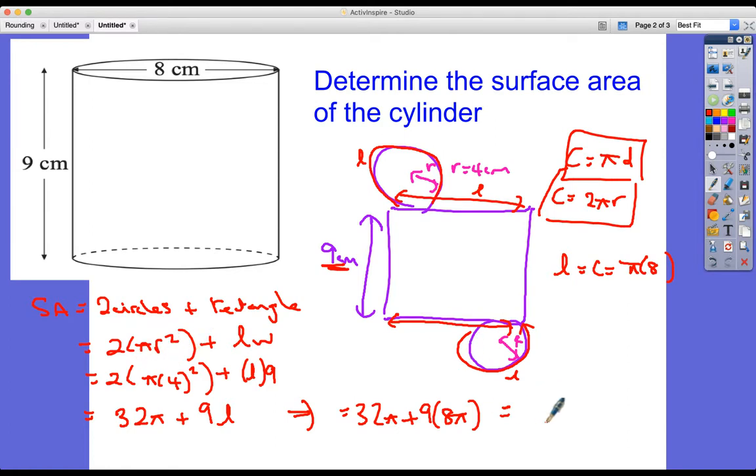So just to recap that, 9 × 8 is 72, so we've got 32π + 72π, which is 104π.